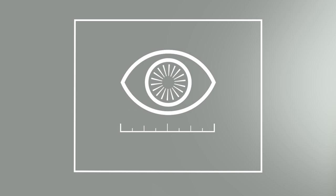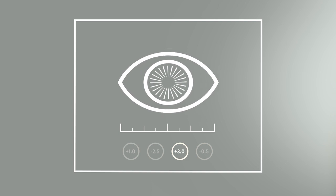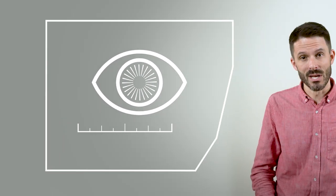Traditionally, surgeons measure the patient's eye before cataract surgery and then try to guess the right power of lens to insert. But because the eye can change during and after surgery, for many patients they either accept a slightly less focused vision or they have a second surgical procedure to try and fine-tune their vision.